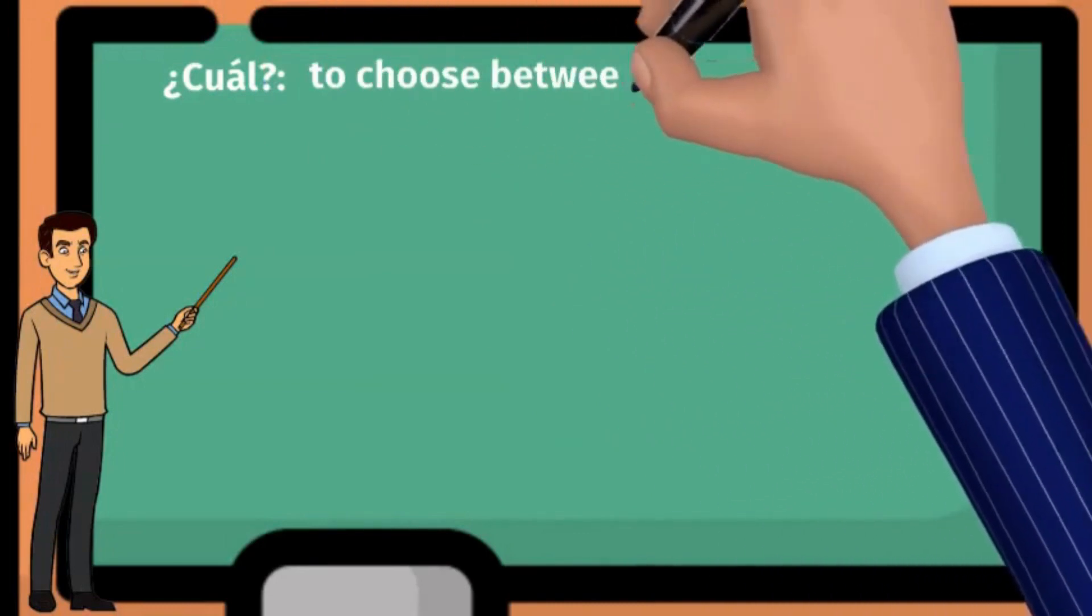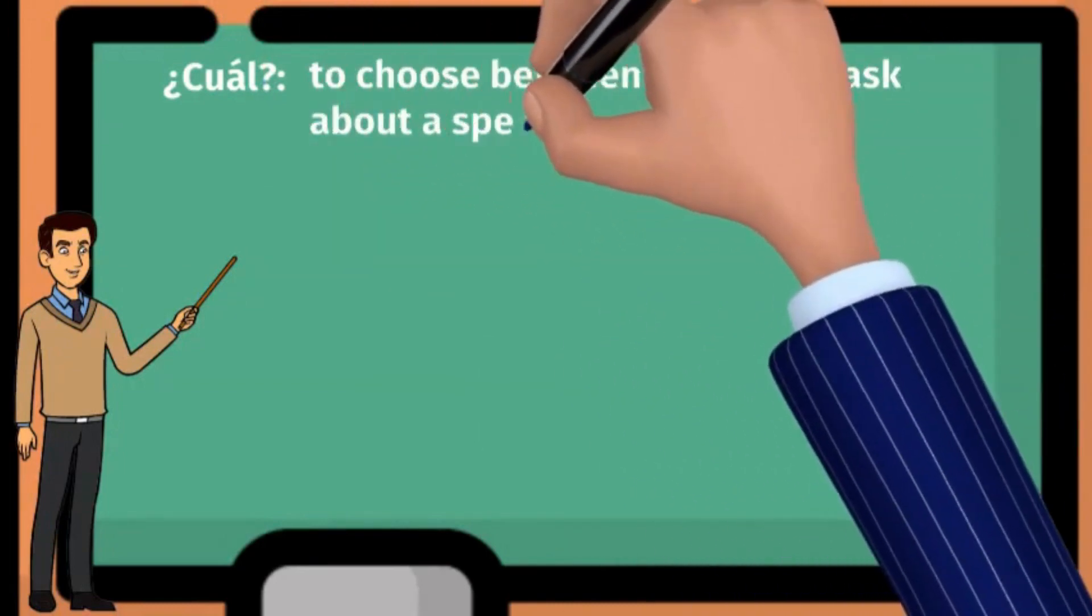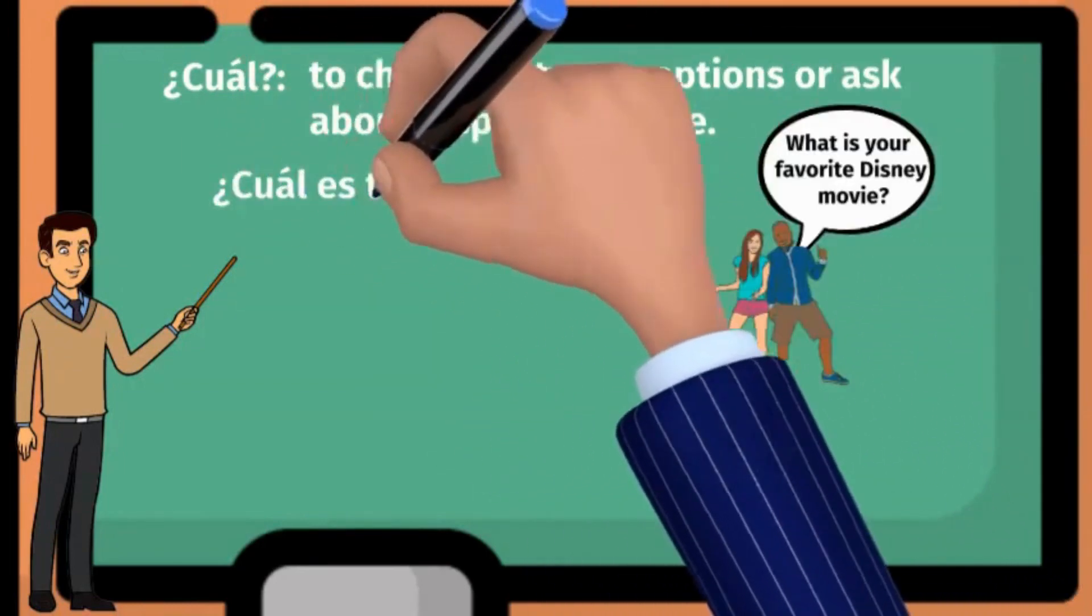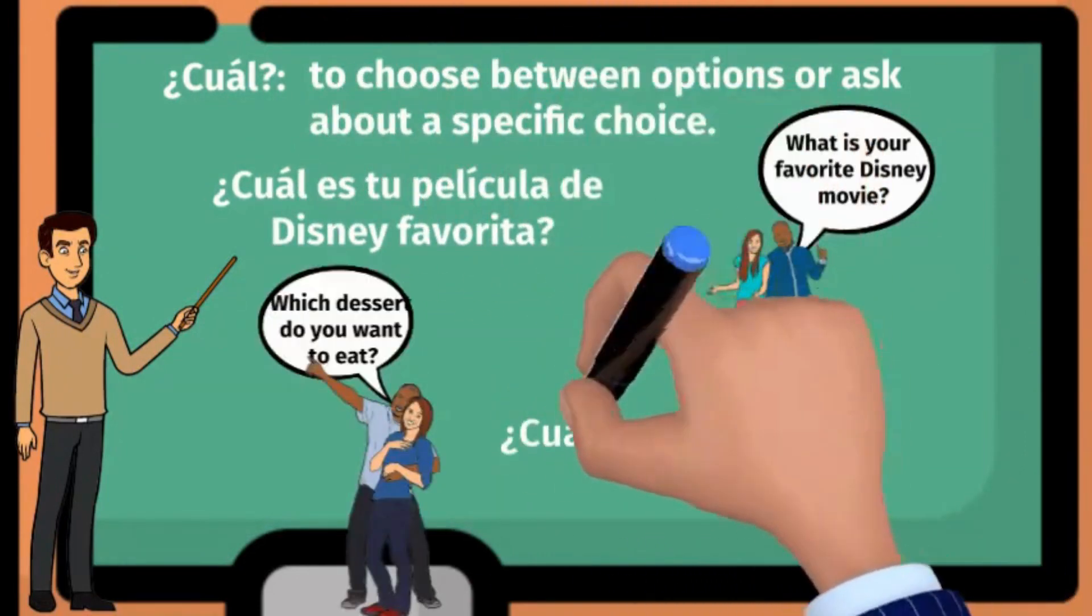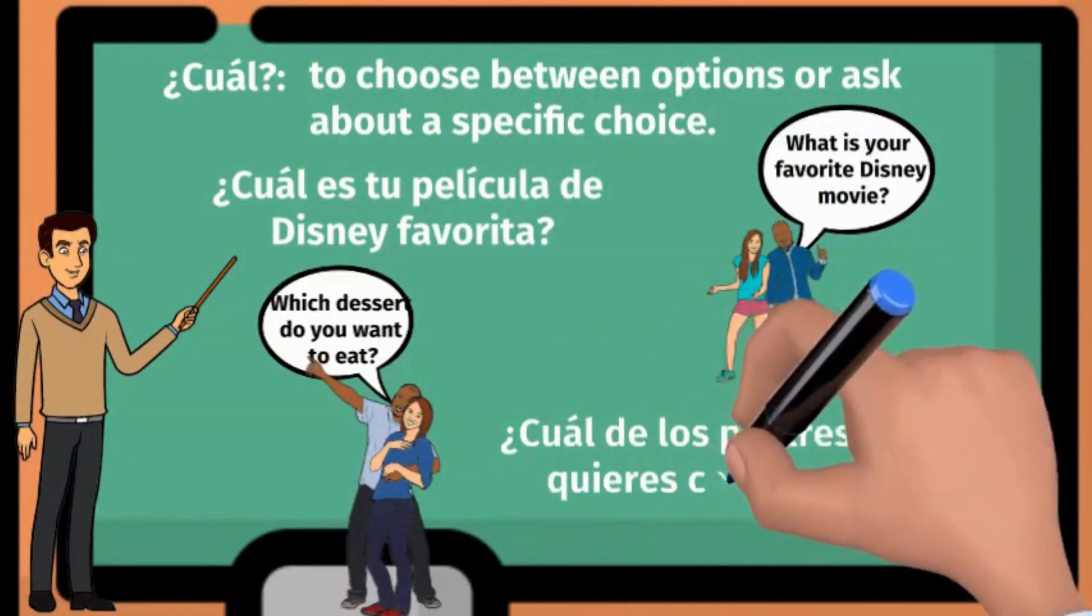Let's now explore ¿Cuál?, which you can use to choose between options or ask about a specific choice. For example, ¿Cuál es tu película de Disney favorita? or ¿Cuál de los postres quieres comer?